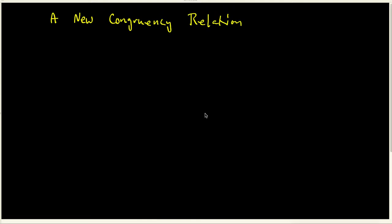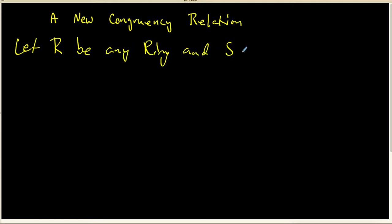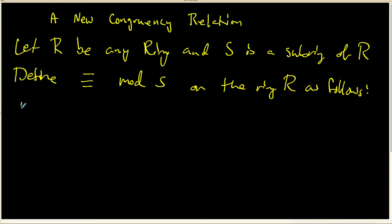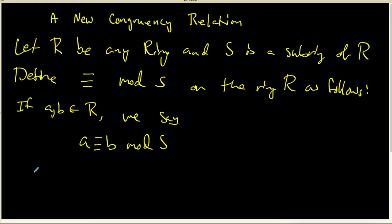In this recording, we're going to define a new congruency relation. We're going to let R be any ring, and S is a subring of R. We're going to define a relation called congruency mod S on the ring R as follows: if A and B belong to ring R, we say that A is congruent to B mod S if and only if A minus B belongs to the subring S.